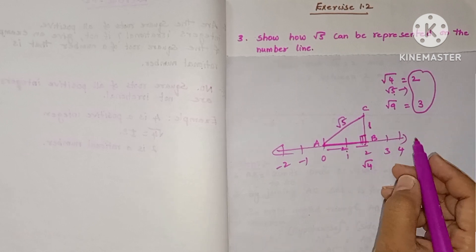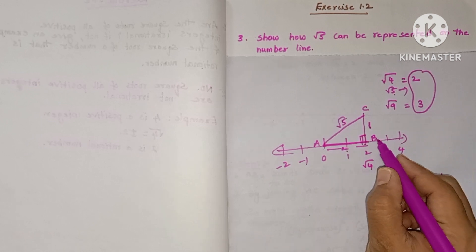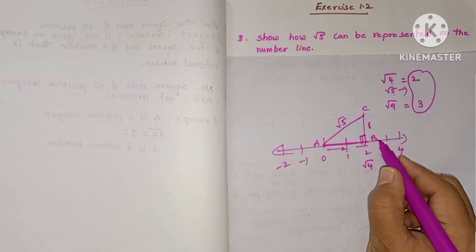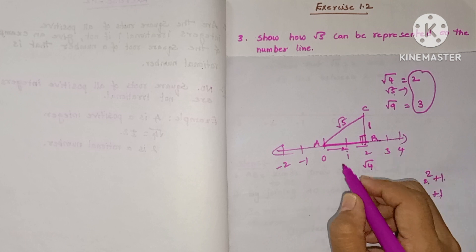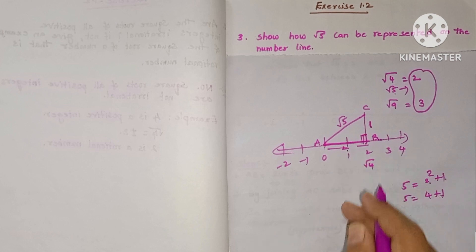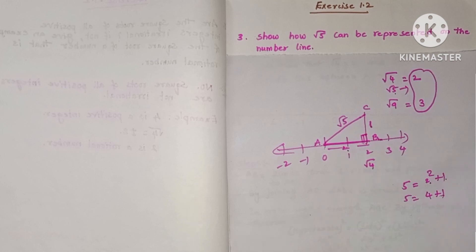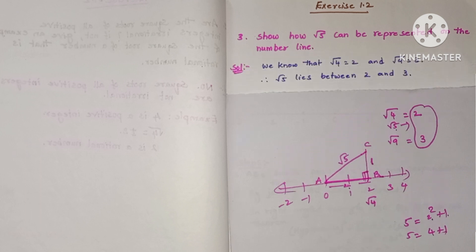Now with this radius we will draw an arc in between 2 and 3, and the particular point where the arc intersects the number line represents root 5.